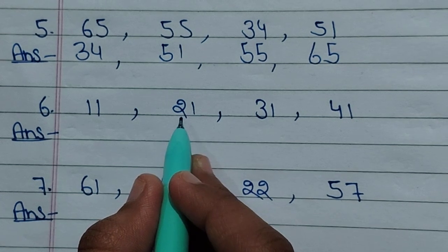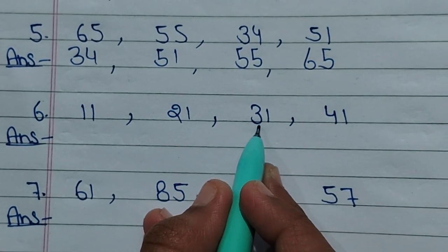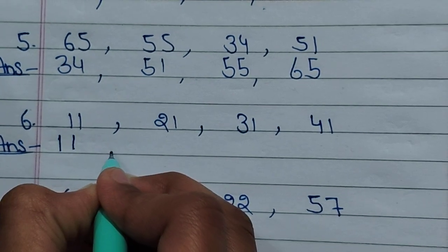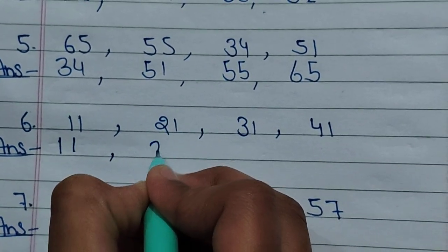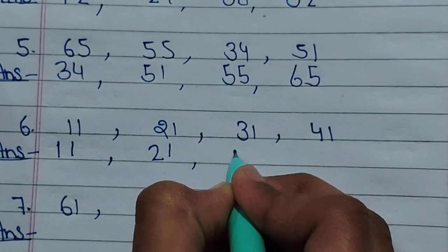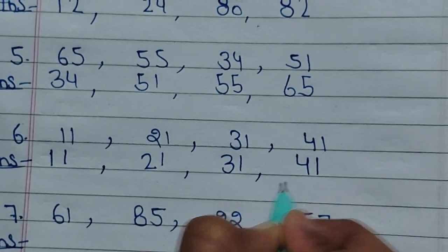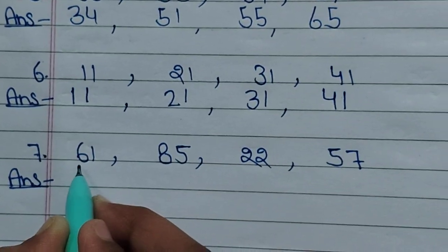11, 21, 31, 41. In ascending order: 11, 21, 31, 41.